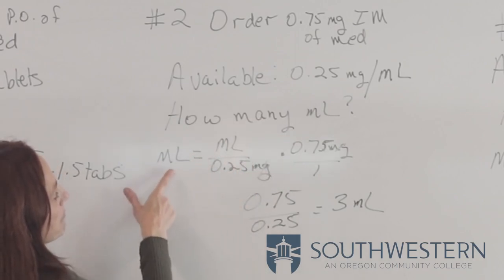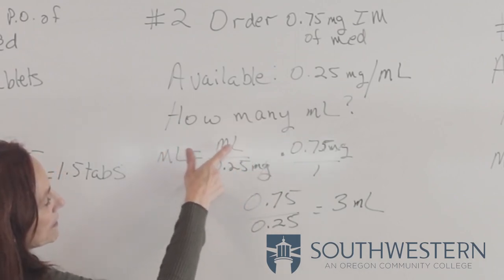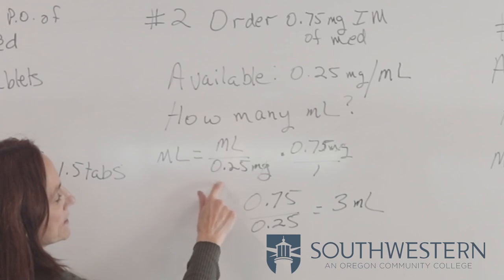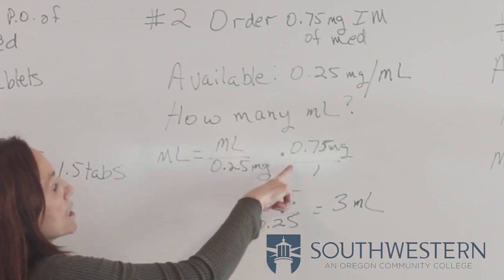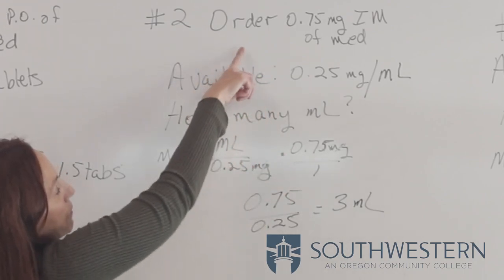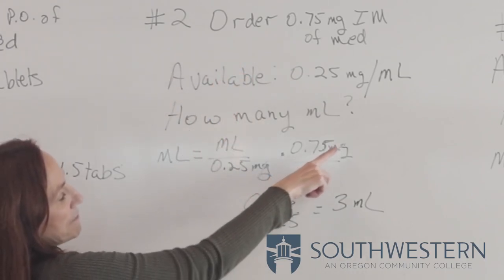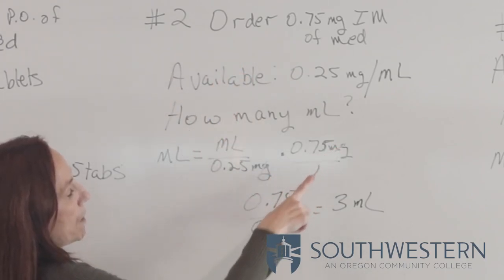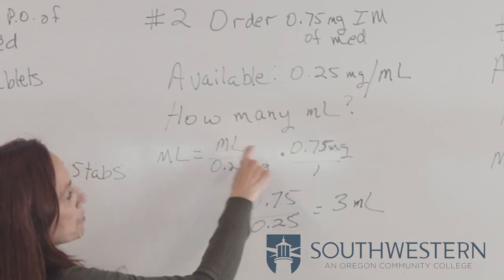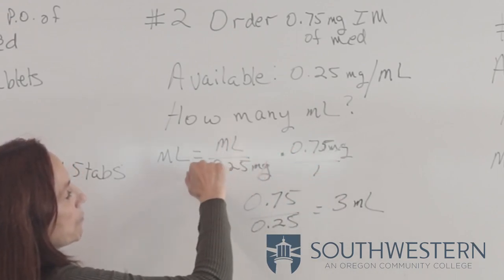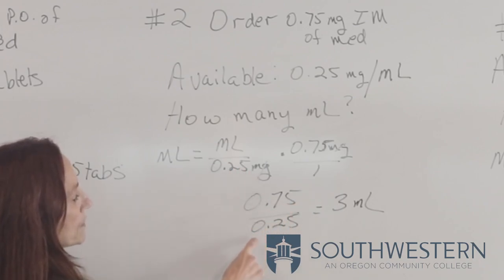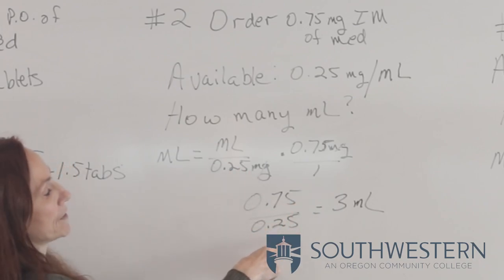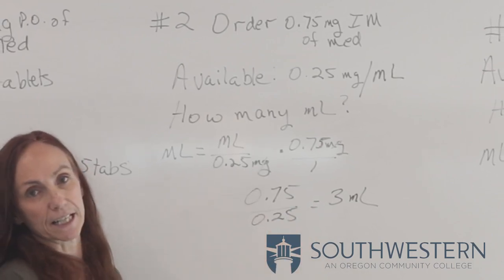Since I'm looking for milliliters, I put milliliters on top over 0.25 milligrams — that's what's available from the pharmacy. I multiply by what was ordered: 0.75 milligrams over 1 as a placeholder. Multiply across: 1 milliliter times 0.75 gives 0.75 over 0.25, which equals 3 milliliters.